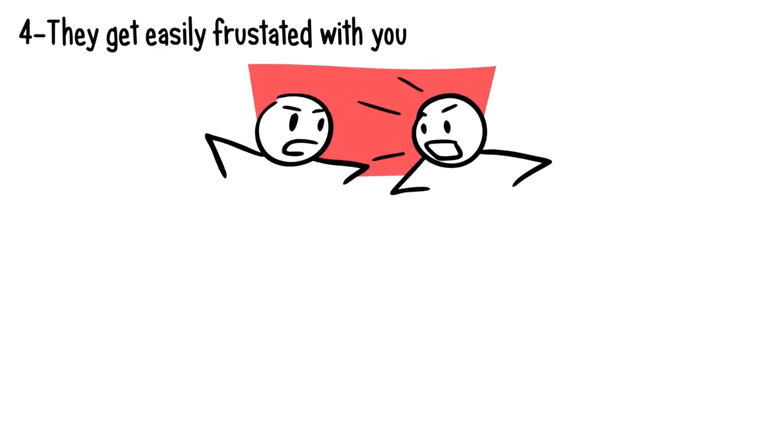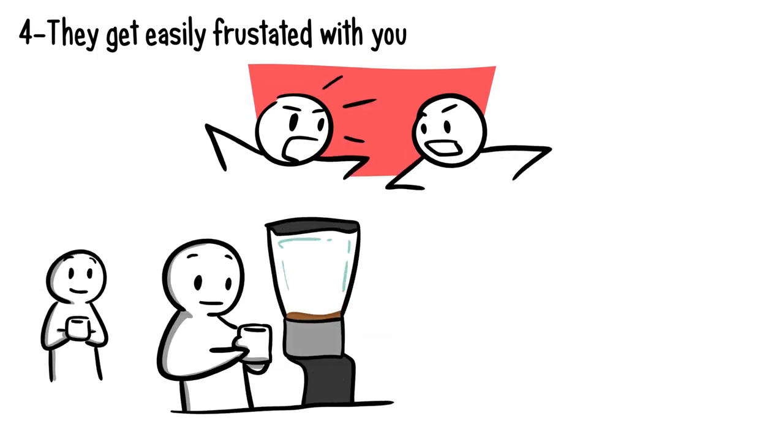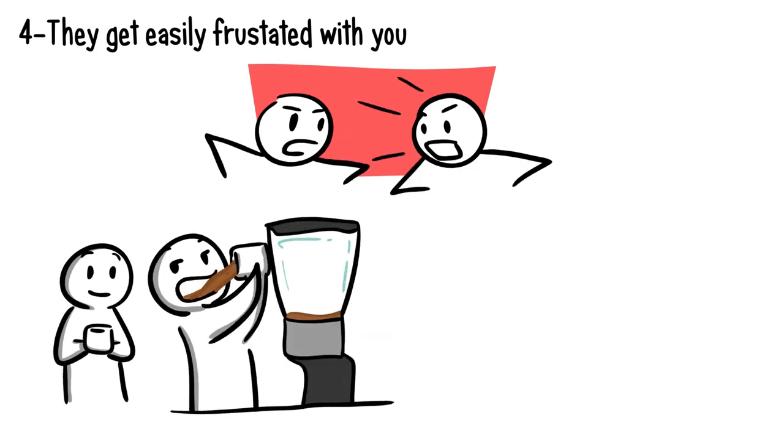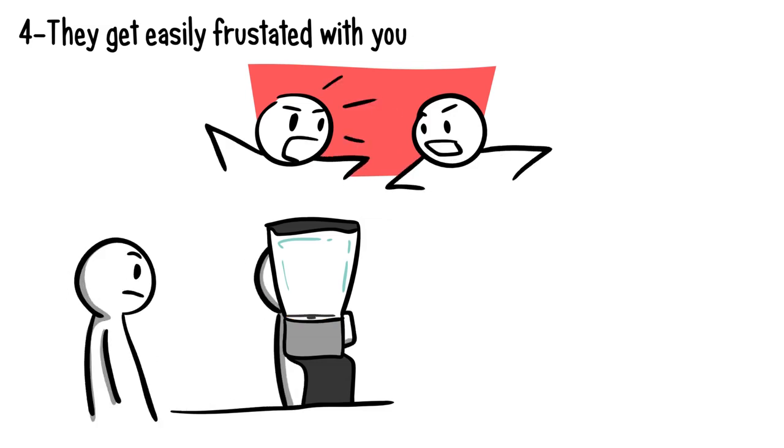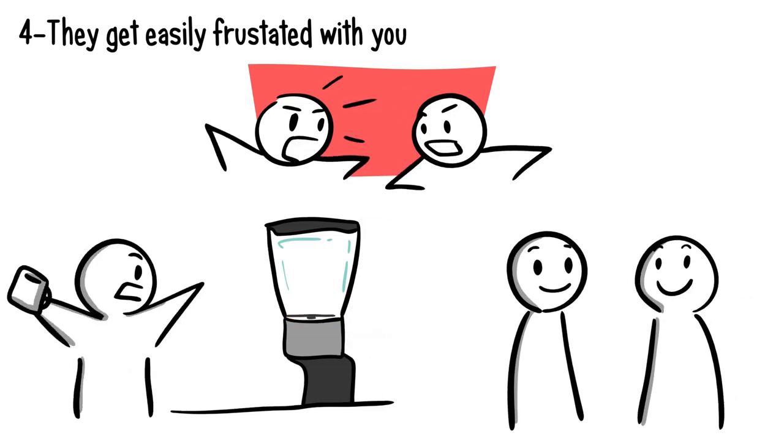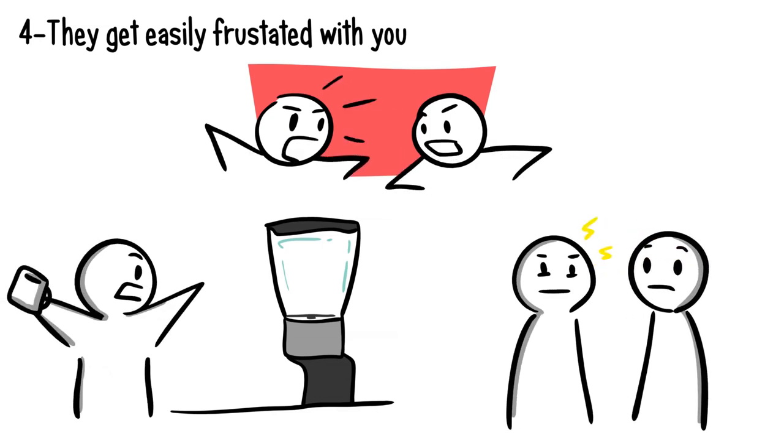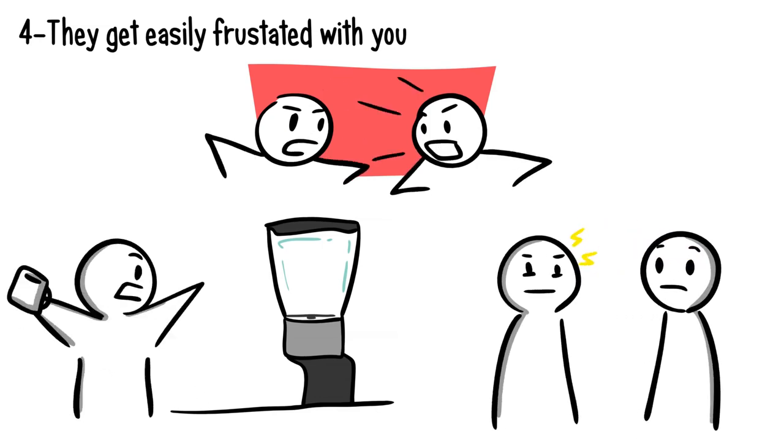Number 4. They get easily frustrated with you. Do the two of you argue or disagree over matters on a daily basis? When someone dislikes you, they'll do anything except make things easy for you. They might have been in a good mood, but once they interact with you, they turn sour, bitter, and angry.